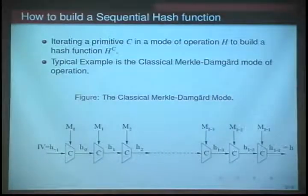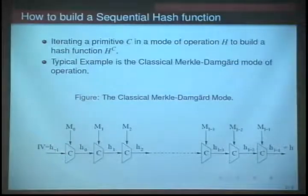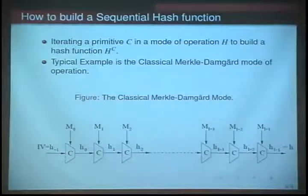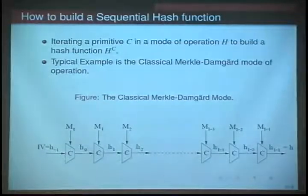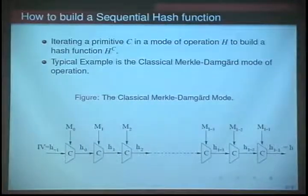If you allow me to go over how an iterative hash function is constructed: you have a primitive C which you think to be very secure, and you just iterate it in a mode of operation to build H_C. Typically, you all know the classical Merkle-Damgård mode, which is a good example of how to generate a hash value in a chaining mode.